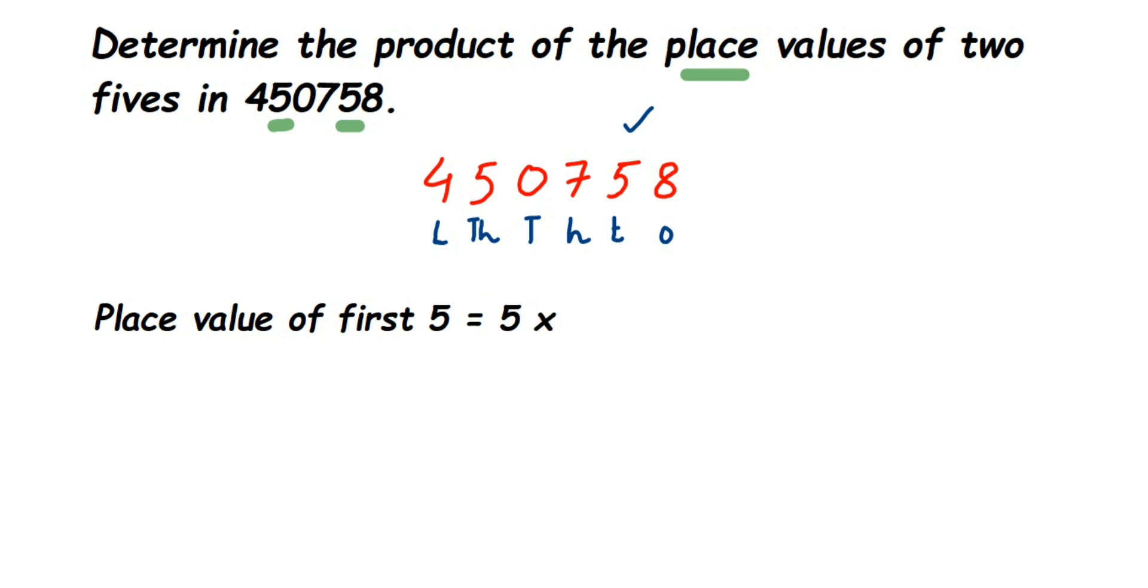Next, the place value of the second five: the second five is in ten thousands place, if you see. The place value will be equal to five into ten thousand, which will be equal to fifty thousand.